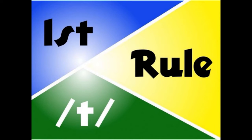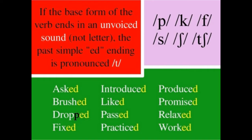So, the first rule: if the base form of the verb ends in an unvoiced sound — not the letter, the sound — the past simple "-ed" ending is pronounced like "-t". When the last sound of the verb is an unvoiced sound, we pronounce "-t" at the end.